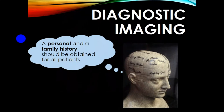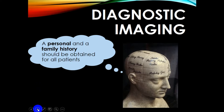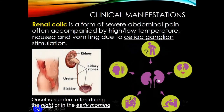The next section of our presentation covers diagnostic imaging. Remember that a thorough examination should be obtained for all patients — a good doctor should remember seeing, palpation, auscultation, and percussion. Clinical manifestations may differ. Renal colic is a form of severe abdominal pain often accompanied by high or low temperature, nausea, and vomiting due to celiac ganglion stimulation. This pain onset is sudden, often during the night or early morning, so patients may present at the clinic during those hours.